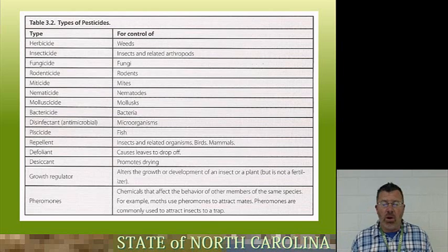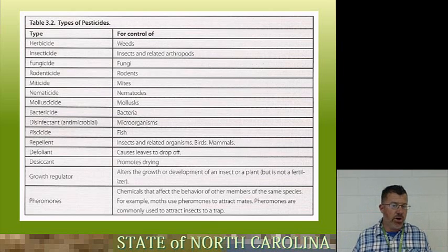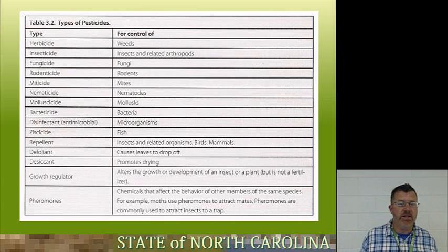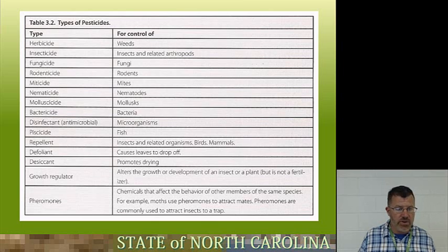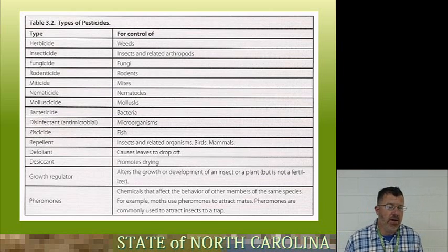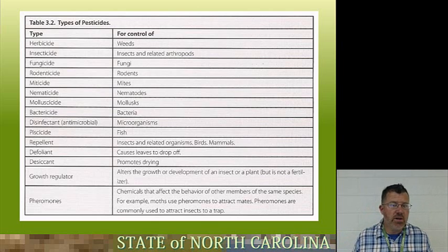Some types of pesticides: Herbicides — primarily for lawn care, spraying in turf. Roundup is a herbicide because it kills weeds and vegetation. Insecticide kills insects and related arthropods. Fungicide is for fungi. Rodenticide is for rodents. Miticide is for mites. Nematocides kill nematodes. And then your molluscicide — for mollusks like snails.